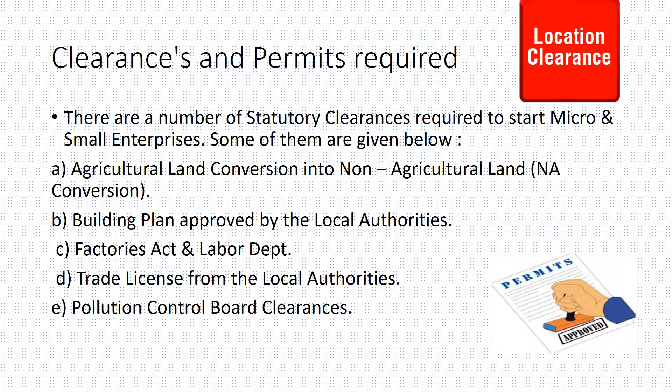For setting up SSI, the following clearances and permits are required. Small-scale industries, ancillary units and tiny enterprises should obtain a provisional registration certificate from the district industrial centers. The environment clearance certificate should be obtained from the Government of India. A No Objection Certificate (NOC) should be obtained from the Pollution Control Board. Permission for the building layout needs to be taken from the Gram Panchayat or Urban Development Authority.